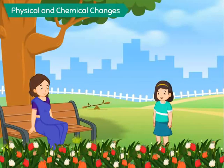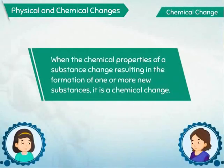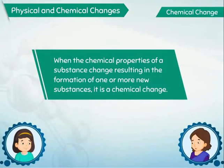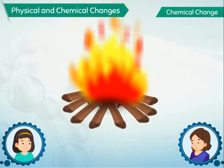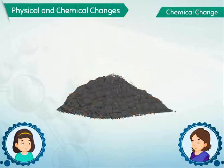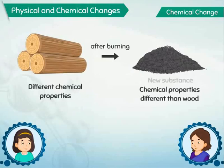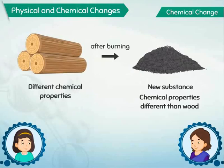What happens during a chemical change, Aunty? When the chemical properties of a substance change, resulting in the formation of one or more new substances, it is a chemical change. If chopped wood is burned, the wood changes into ash. The ash is a new substance which has different chemical properties than wood, and it cannot be changed back into wood again. This is a chemical change.